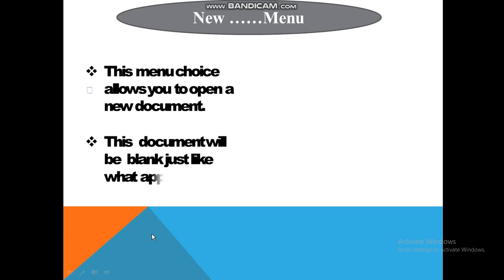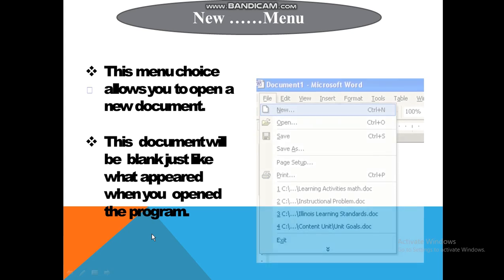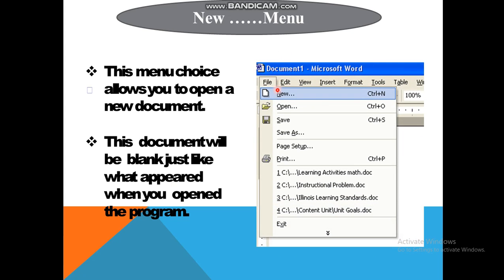अब हम देखेंगे New option। This menu choice allows you to open a new document; this document will be blank, just like what appeared when you opened the program. जब हम File menu देखेंगे तो उसमें सबसे पहला option आता है New। New मतलब नया — जैसे आपने एक नई copy लाई तो उसमें blank pages होते हैं, कुछ नहीं लिखा होता। ऐसे ही जब आपको कुछ लिखने के लिए नया document चाहिए तो File option पे click करके New पे click करेंगे — एक blank document आएगा। इसकी shortcut key है Control + N — अगर आप keyboard से Control और N press करोगे तो एक नया document खुलेगा।